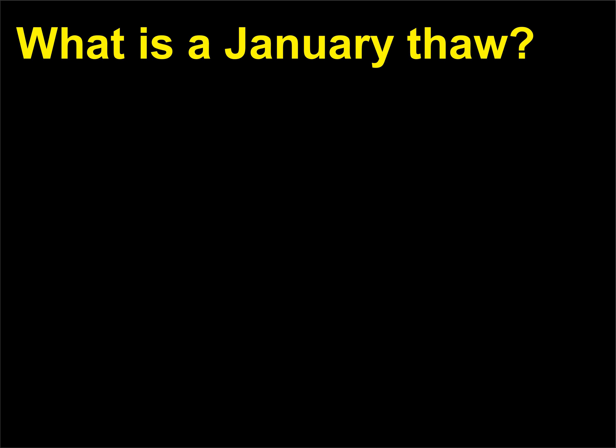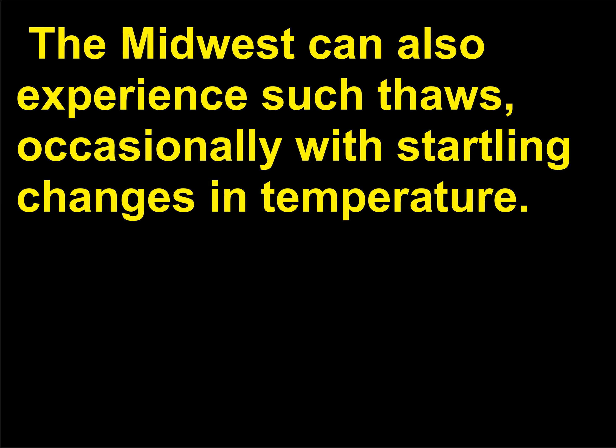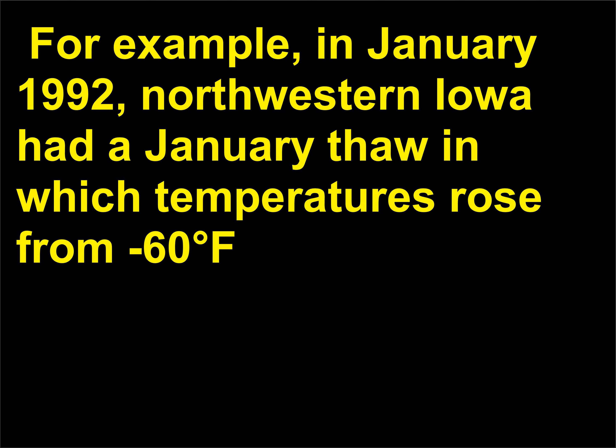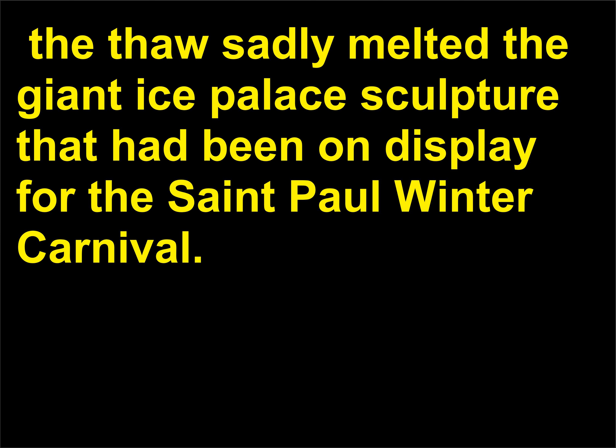What is a January thaw? Mostly seen in the northeastern United States and in the United Kingdom, a January thaw is a brief mid-winter period, usually late in the month, in which temperatures moderate somewhat. The Midwest can also experience such thaws, occasionally with startling changes in temperature. For example, in January 1992, northwestern Iowa had a January thaw in which temperatures rose from minus 60 degrees Fahrenheit (minus 51 degrees Celsius) to above freezing in just two weeks. While the change was welcome for many people, the thaw sadly melted the giant ice palace sculpture that had been on display for the St. Paul Winter Carnival.